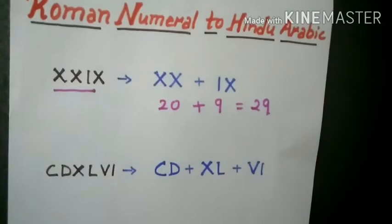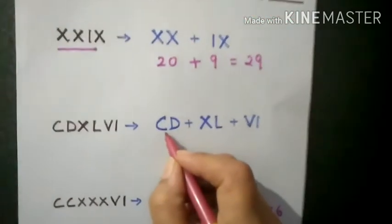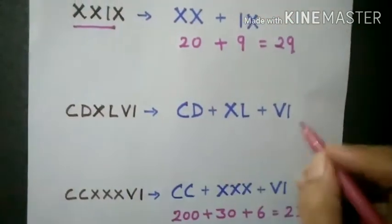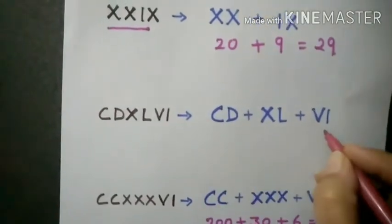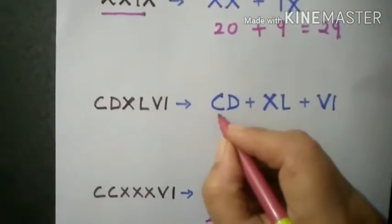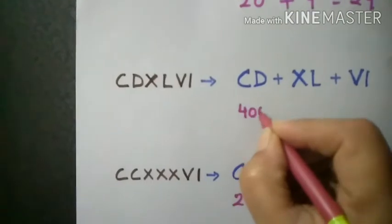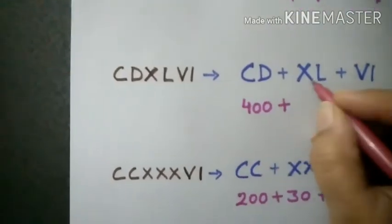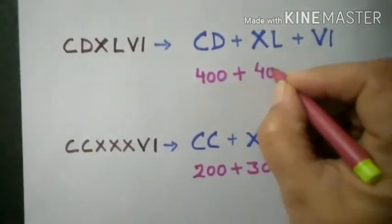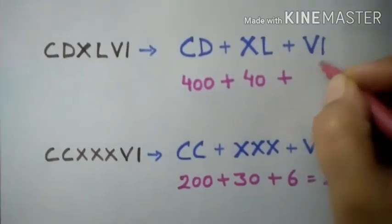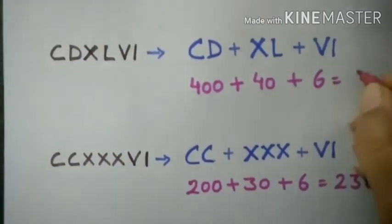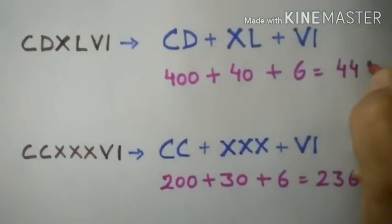See another one. Here, CD, XL and VI. We have divided into three parts. CD is 400. Then XL means 40. VI means 6. So this is 446.